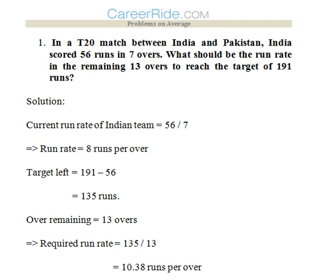The first question: In a 2020 match between India and Pakistan, India scored 56 runs in 7 overs. What should be the run rate in the remaining 13 overs to reach the target of 191?